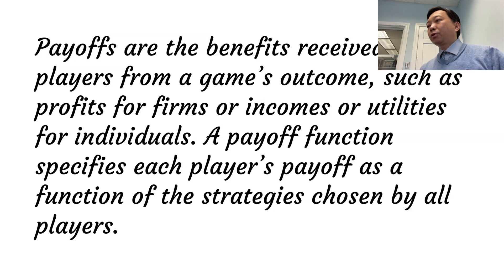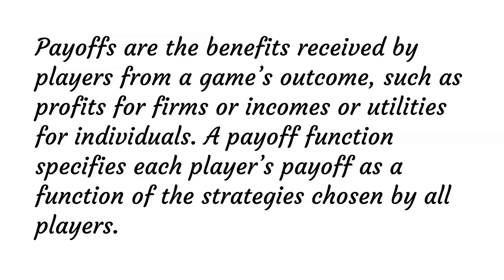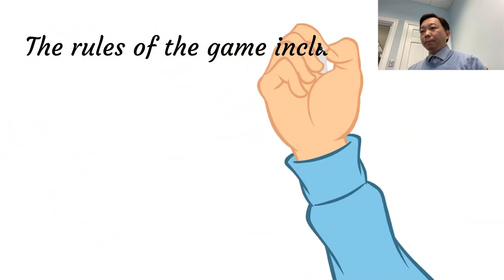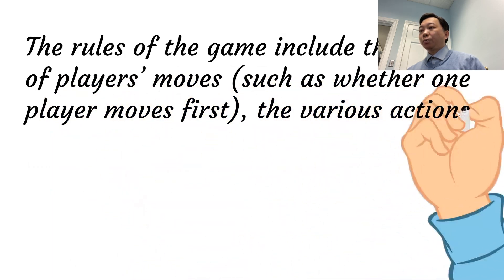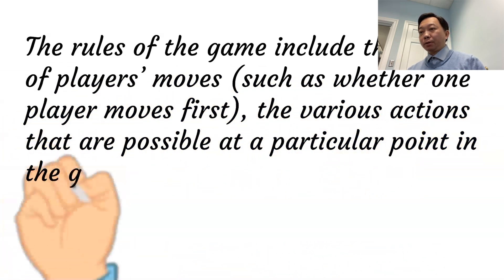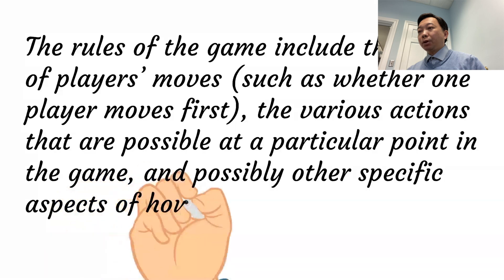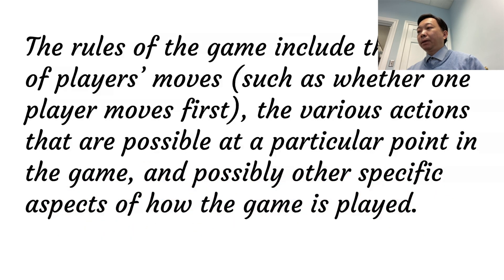A payoff function specifies each player's payoff as a function of the strategies chosen by all players. The rules of the game include the timing of players' moves, such as whether one player moves first, the various actions that are possible at a particular point in the game, and possibly other specific aspects of how the game is played.